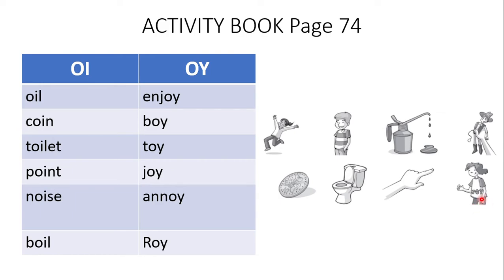Next one is a girl wearing a t-shirt written joy, so again it goes with oy. Apart from these, I've also jotted down a few more examples: noise with oi, boil with oi when the water heats it boils, annoy with oy to make someone angry, and Roy is a name with oy.